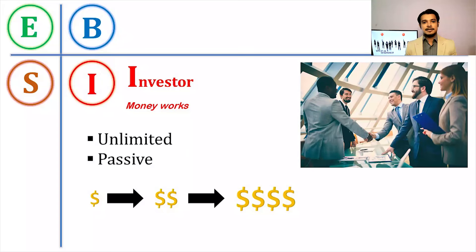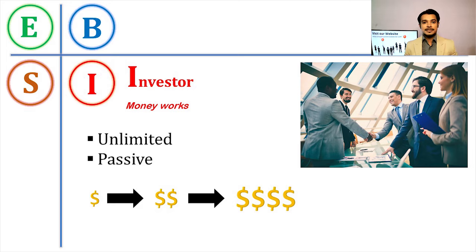When people generate wealth through big businesses, they think about investing that wealth in different businesses — those are the people belonging to the I category, investors. Investors make money work for them, generating unlimited passive income. However, only 1% of the world population belongs to the investor quadrant. Becoming an investor is not easy — you need a huge amount of wealth and cash flow, potentially millions of dollars per day, to qualify as an investor.